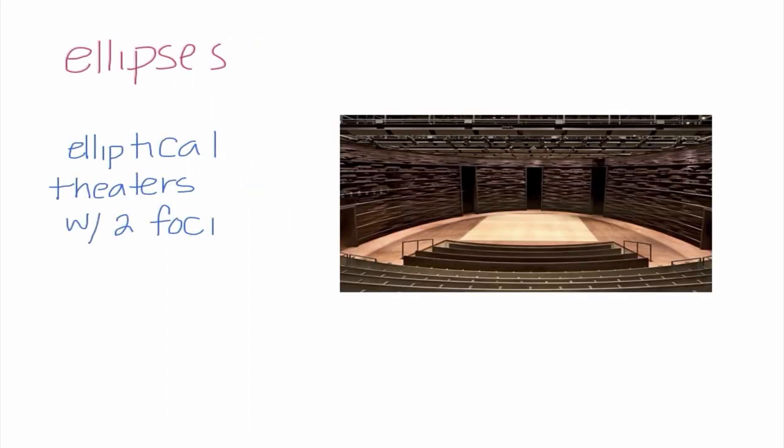Another place we will see ellipses is there are some elliptical theaters and galleries that, obviously, in the title are shaped as an ellipse. And the whole purpose of this is that the definition of an ellipse, it is the sum of the distances from the two foci. So if we have two foci, wherever they may be, if you're actually standing at one focus, you can hear everything going on at the other focus, even if it is completely across the room.